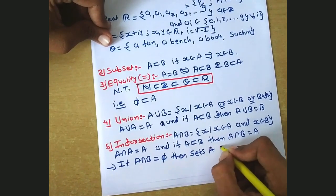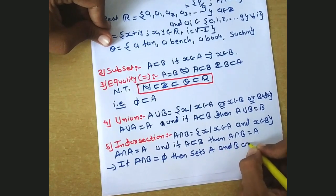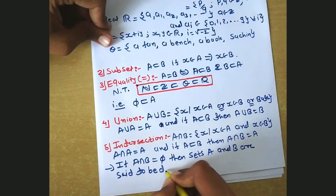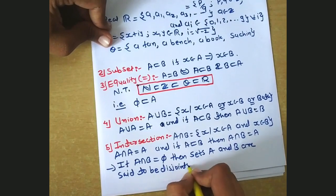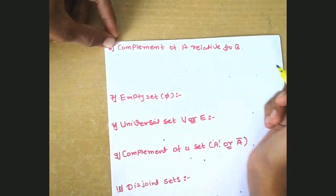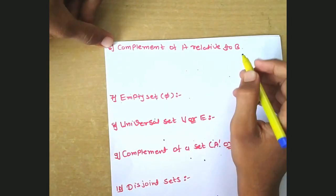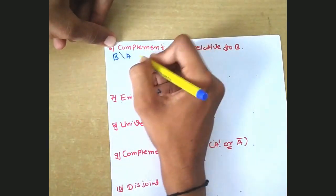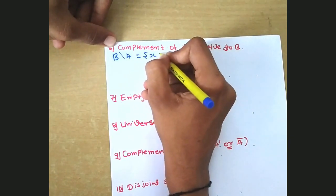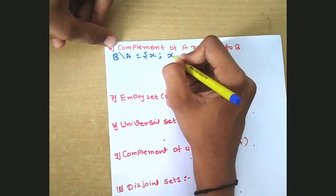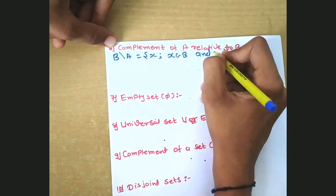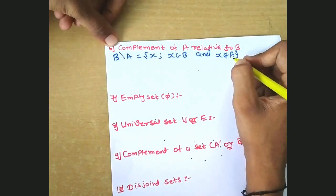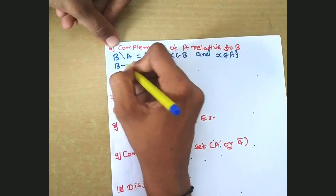Sets A and B are said to be disjoint. Now, the complement of A relative to B — we can denote it as B \ A, which equals the set of all x where x belongs to B and x does not belong to A. This is also denoted as B minus A.